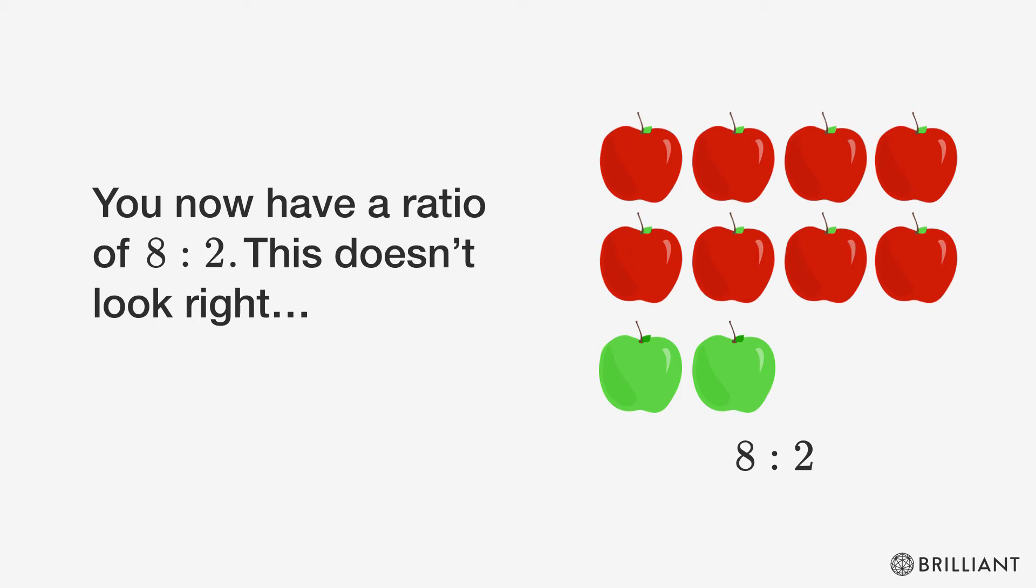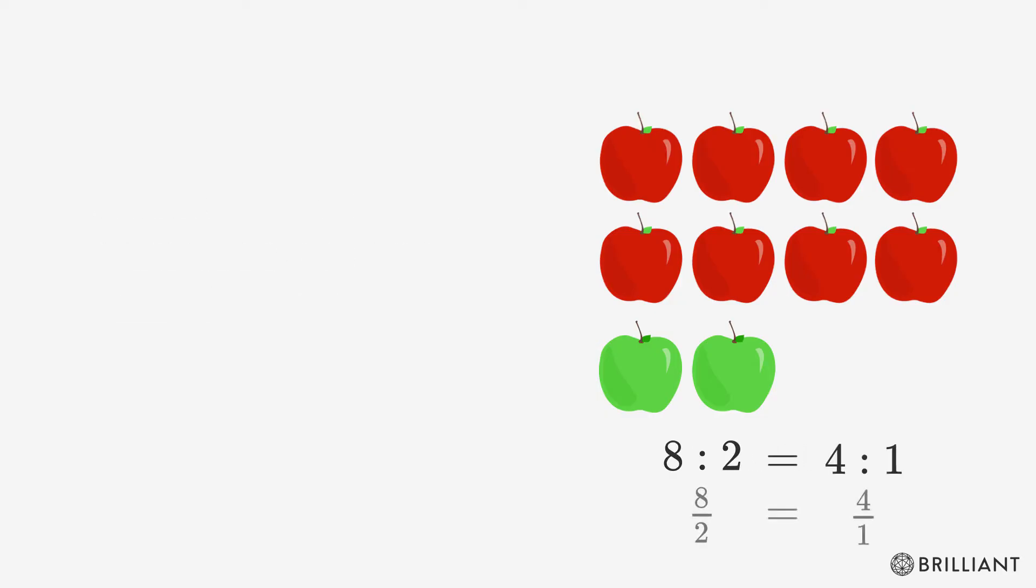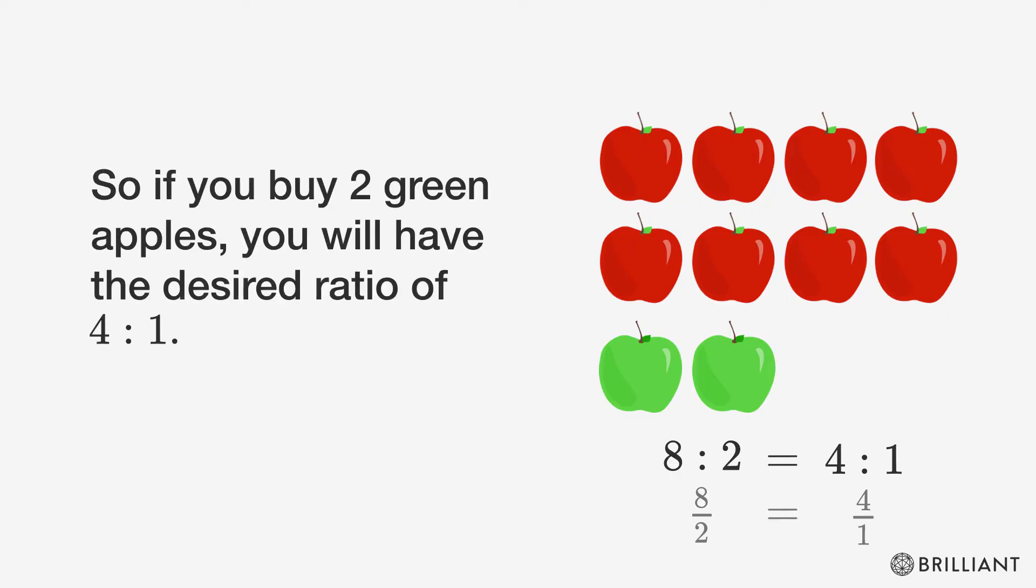This doesn't look right, but since a ratio is a fraction, we can scale it down. So a ratio of 8 to 2 is the same as the ratio of 4 to 1. Then if you buy two green apples, you'll have the desired ratio of 4 to 1 red apples to green apples.